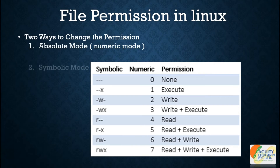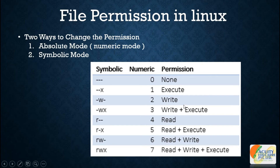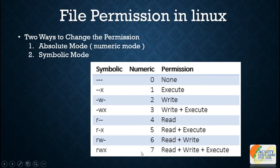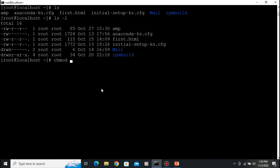There are two ways to change permission: the first is absolute mode and the second is symbolic mode. We are going with absolute mode, which uses numeric numbers. To give read, write, and execute permission, you type 7. So 7 means read, write, and execute. For read and write only, you type 6.